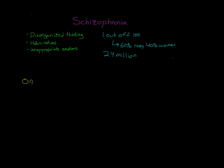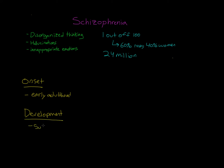In terms of onset, schizophrenia usually appears in late adolescence or early adulthood. As for how the disorder develops, it seems to be very different for different people. For some, it seems like there's a sudden onset in response to some life stressor, but for others it's more gradual, meaning that the symptoms slowly develop over time.